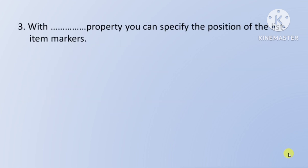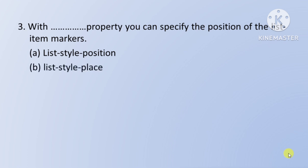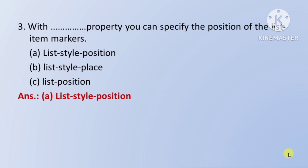Next question: with which property can you specify the position of the list item markers — kaun si property ka prayog karke aap list item markers ki position ko specify kar sakte hain. Option A: list-style-position. Option B: list-style-place. Option C: list-position. Toh iska right answer hai Option A: list-style-position.